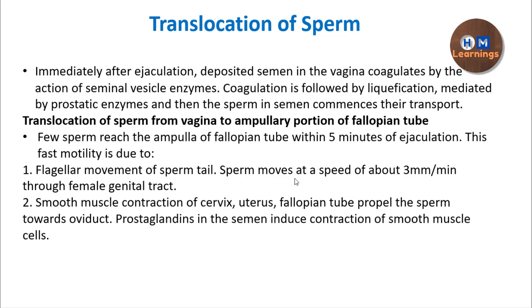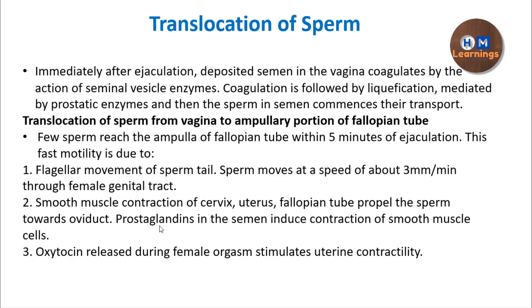The second thing assisting sperm transport is smooth muscle contraction of the cervix, uterus, and fallopian tube. The smooth muscles of these regions contract in such a way that they push the sperm from the lower part of the female reproductive tract to the upper part. This contraction is induced by prostaglandins in the semen and also by oxytocin from the female, which is released during female orgasm.